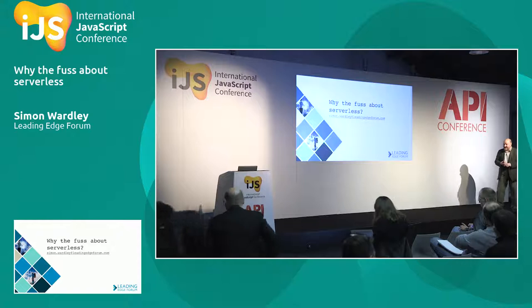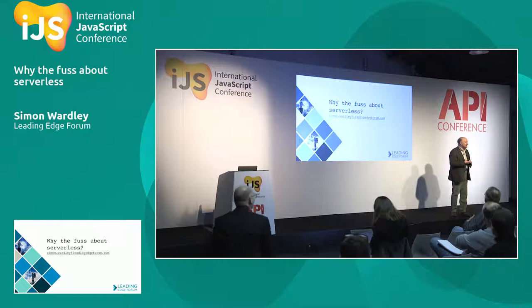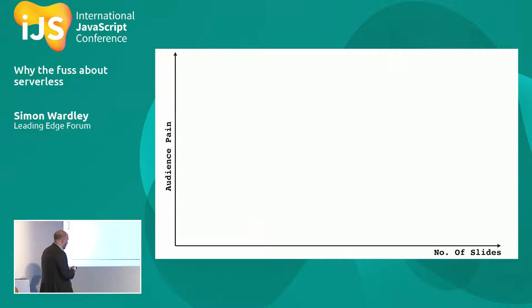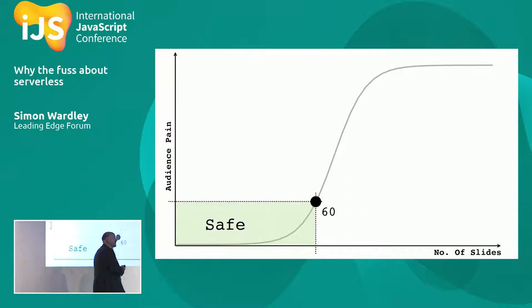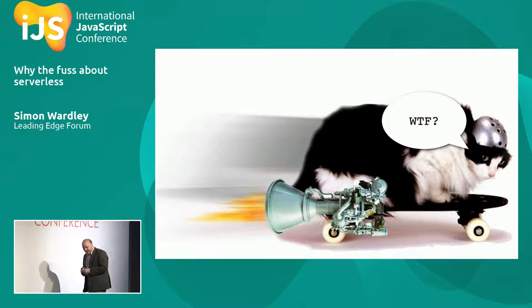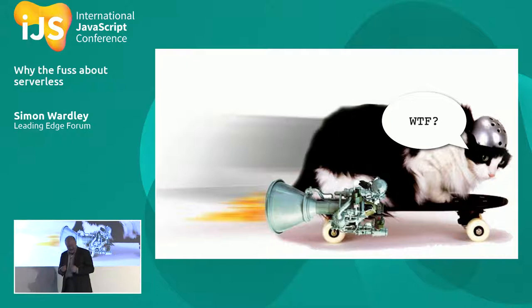I'm Simon Wardley. I'm going to talk about the whole space of serverless and APIs and something called mapping. Quick word of warning: I'm a scientist by training, which means I like graphs. The level of audience pain against the number of slides in a 45-minute session — there's a safe limit of about 60. Being a scientist, I like to experiment, so we'll be using no less than 242. We've actually only got 32 minutes left, so we're really going to go at a pace.